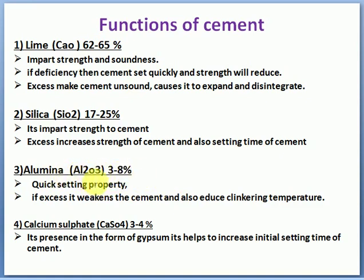Alumina (Al2O3), 3 to 8% — its function is to provide quick setting property to the cement. If excess, it weakens the cement and also reduces the clinkering temperature. So alumina in excess quantity reduces the clinkering temperature of cement.